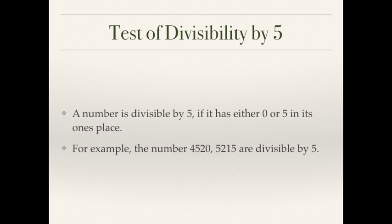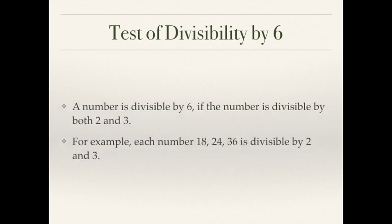The easiest one — test of divisibility by 5: just check the last digit. If the digit in the one's place is 0 or 5, then the whole number, however big it is, will be divisible by 5. Coming to divisibility by 6: a number is divisible by 6 if it is divisible by both 2 and 3. It must satisfy the divisibility test of both 2 and 3. Numbers like 18, 24, and 36 are multiples of both 2 and 3, so they are also multiples of 6.